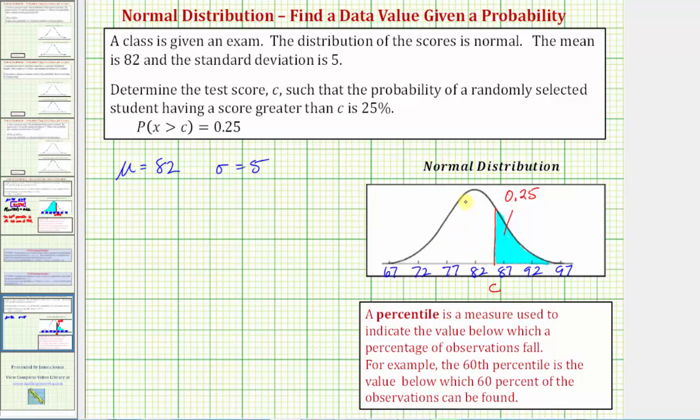So let's go ahead and shade to the left of c. So to find the probability to the left, we would take 100 percent and subtract 25 percent, or in decimal form, we would have 1 minus 0.25, which equals 0.75.